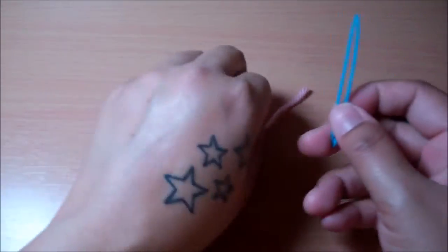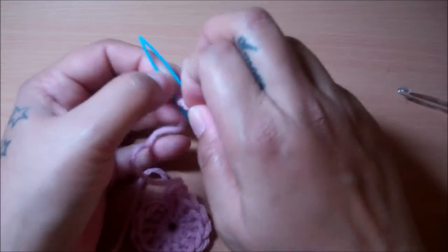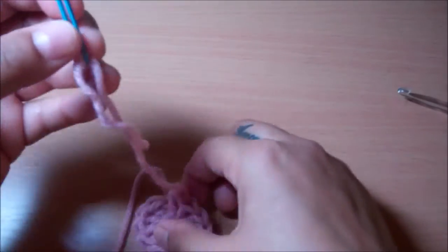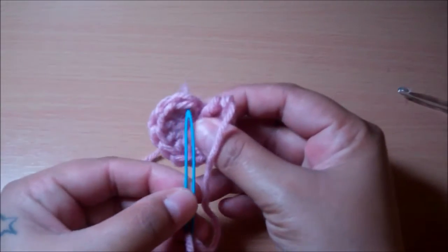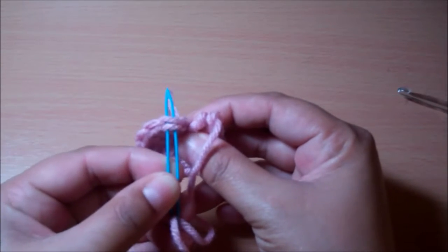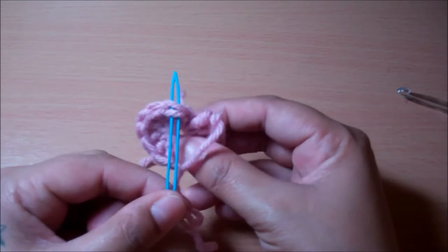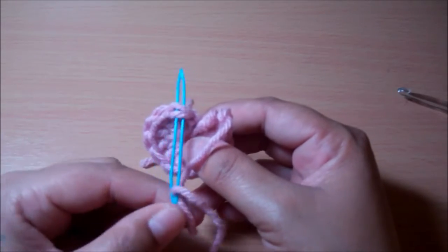And then you're going to grab your tapestry needle and you're going to insert it into these two loops here, which is your first double crochet that was made in your first round.